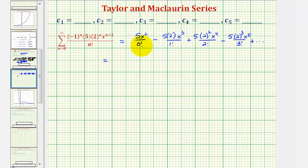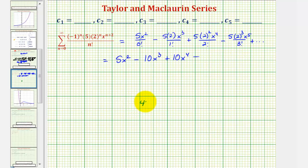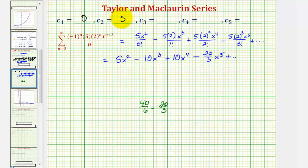Simplifying: 5x² divided by 1 gives 5x². Then minus 10x³ divided by 1 gives minus 10x³. Then 5 times 4 = 20 divided by 2 factorial = 10, giving plus 10x⁴. Then 5 times 8 = 40 divided by 3 factorial = 40/6, which simplifies to 20/3, giving minus (20/3)x⁵. So the first term is degree 2, meaning c sub 1 = 0, c sub 2 = 5, c sub 3 = negative 10, c sub 4 = positive 10, and c sub 5 = negative 20/3.